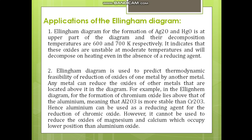Now, applications of the Ellingham diagram. The Ellingham diagram gives us information about the choice of a reducing agent — that is the main purpose of this diagram. Consider the formation of Ag₂O and HgO from the upper part of the diagram. Only at higher temperatures, above 600 and 700 Kelvin, is their decomposition possible. This indicates these oxides are unstable at moderate temperatures and will decompose on heating even in the absence of a reducing agent — so no reducing agent is needed.